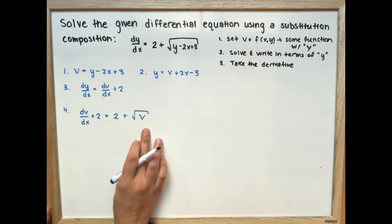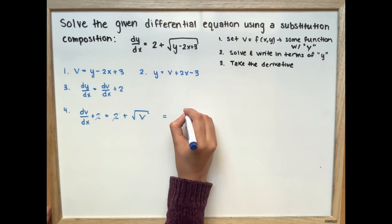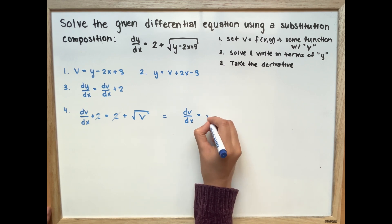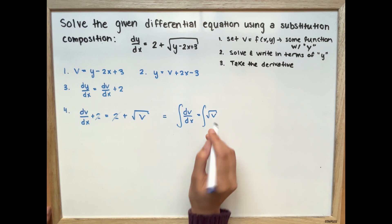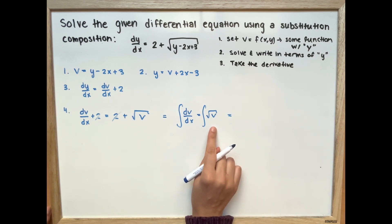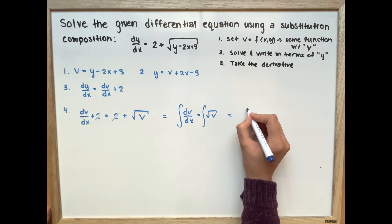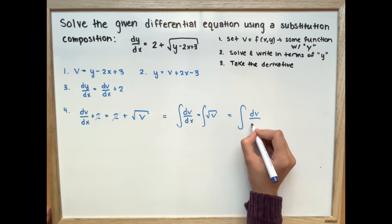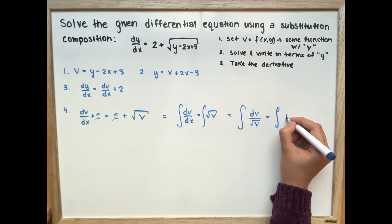So now we can simplify this — our twos are going to cancel out and we're going to have dv over dx is equal to the square root of v. And now we can take the integral of both sides, moving the v's to the left side and the x's to the right side.